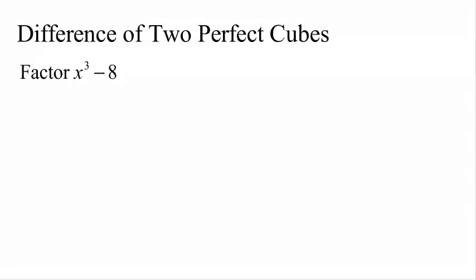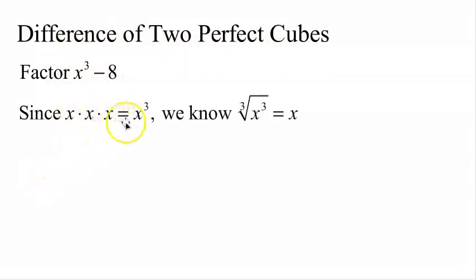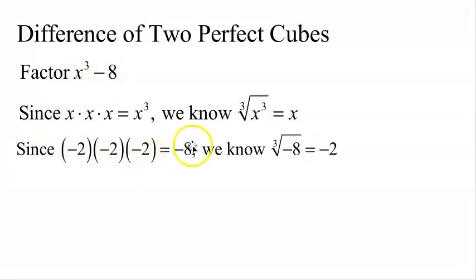I want to factor x cubed minus 8. Most textbooks give you a formula, but I prefer a box-based strategy. First, let's confirm this is a difference of two perfect cubes. x times x times x is x cubed, so the cube root of x cubed is x — a perfect cube. For negative 8: negative 2 times negative 2 times negative 2 is negative 8, so the cube root of negative 8 is negative 2. The process starts with the cube roots.